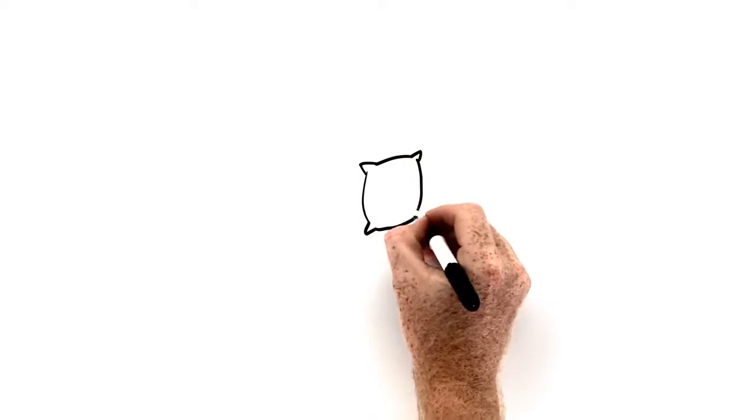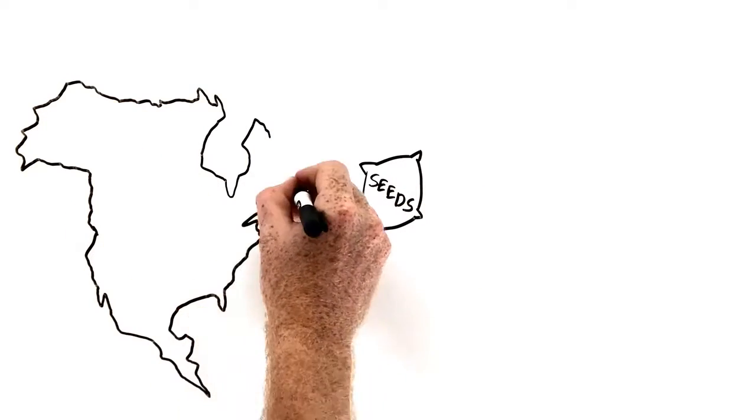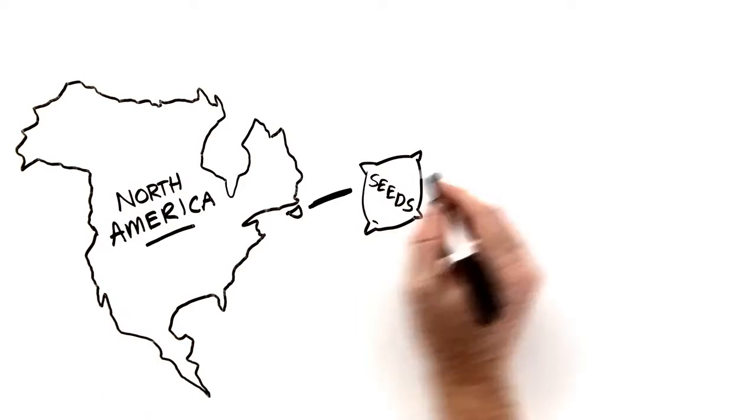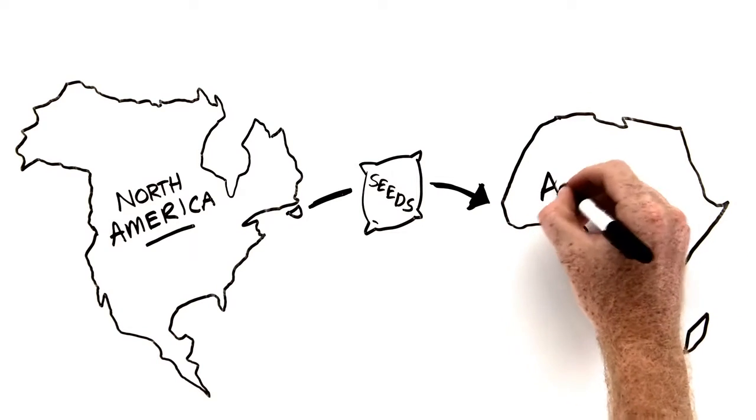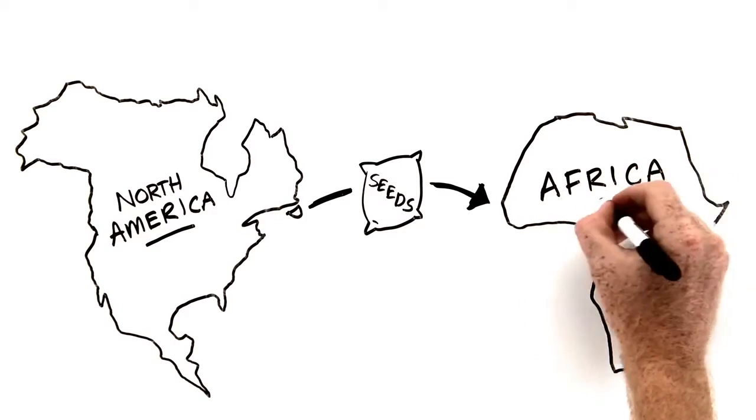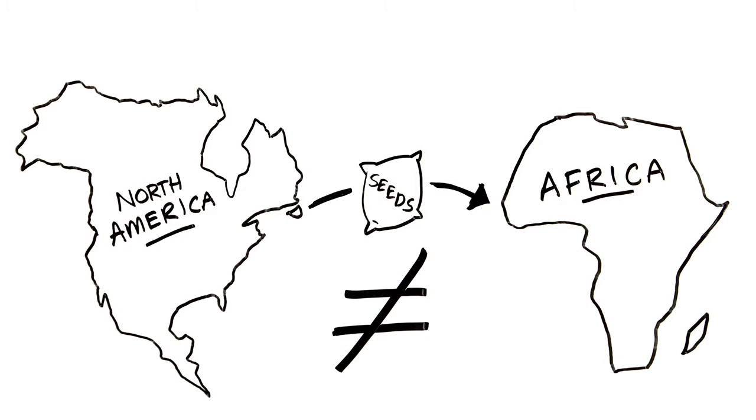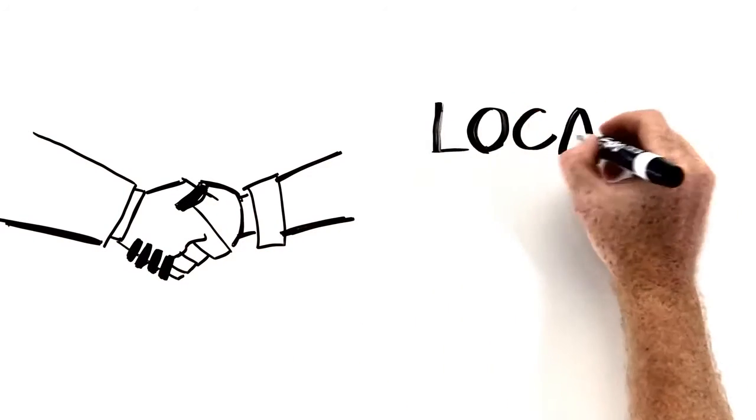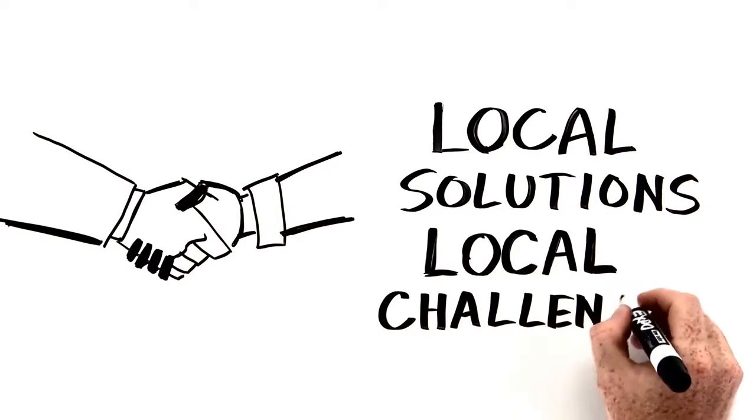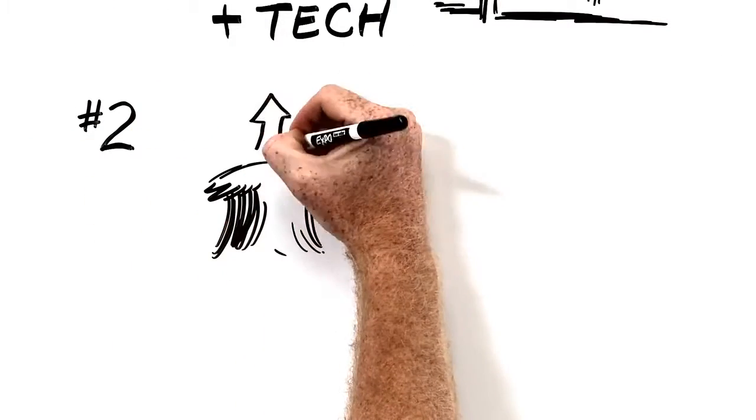But it's not as if we can take the seeds and equipment that seem to work on North American farms and simply give them away to African farmers. This doesn't work because African soils, cultures, and communities are totally different than in North America or Europe. So scientists must partner with farmers to develop locally appropriate solutions to local challenges. Just using science and technology won't be enough, however.